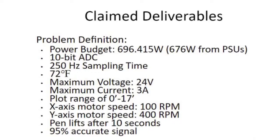250 hertz sampling time to accommodate Nyquist theorem. 72 degrees Fahrenheit for the thermal budget so that we're not operating this machine in anything other than room temperature. We don't plan on that happening. Maximum voltage being 24 volts, maximum current being 30 amps.